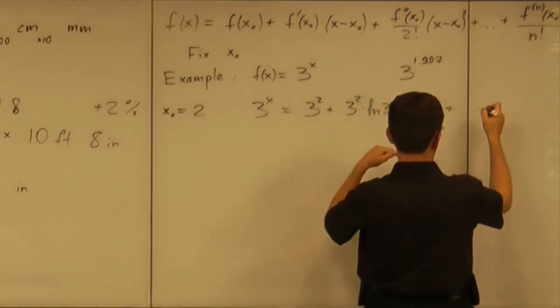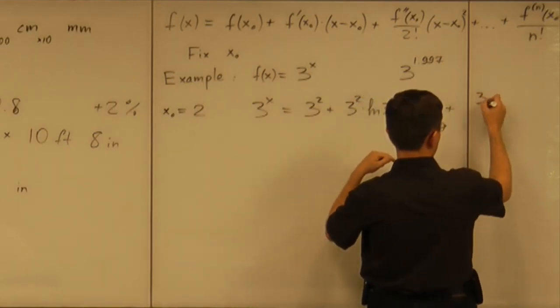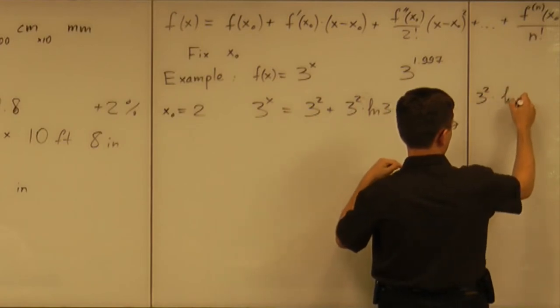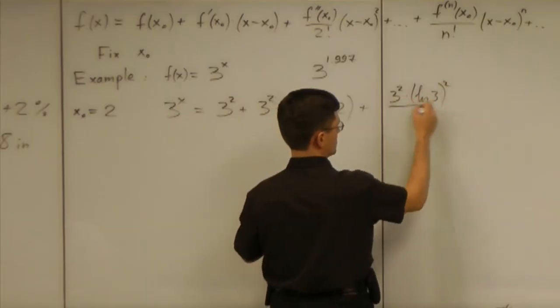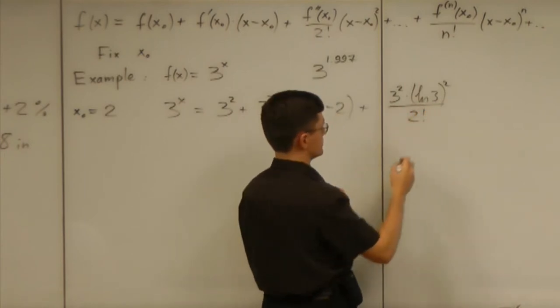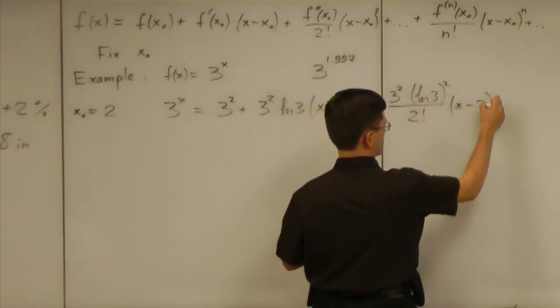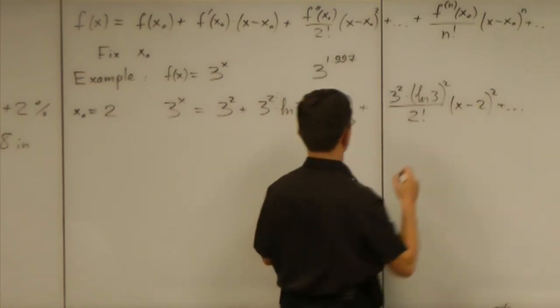plus the second derivative is 3^2 times (natural log of 3) squared. That has to be divided by 2 factorial times (x minus 2) squared, and so on.